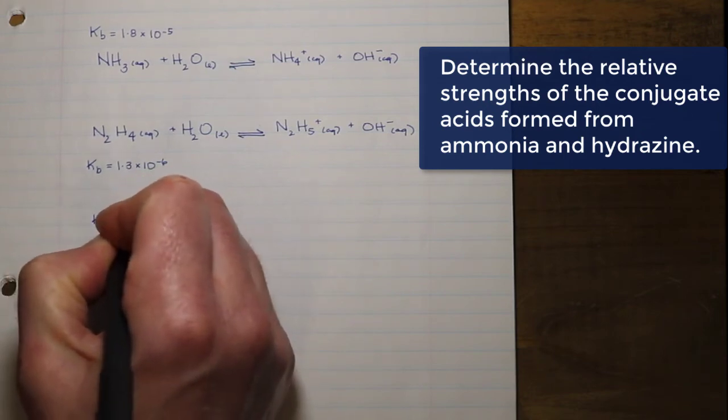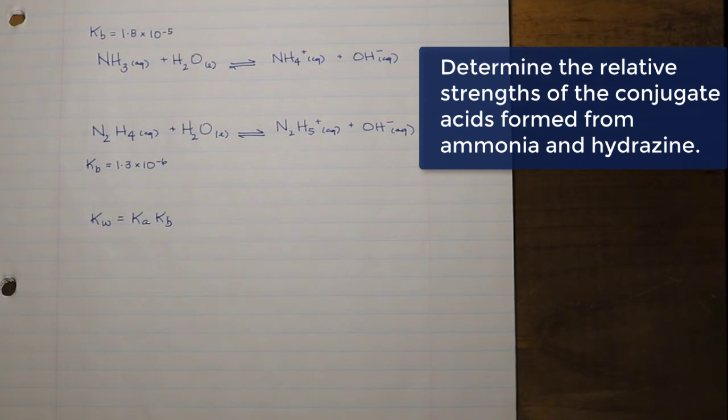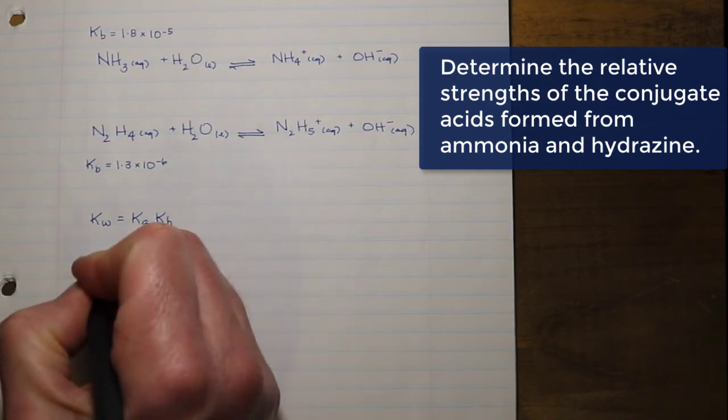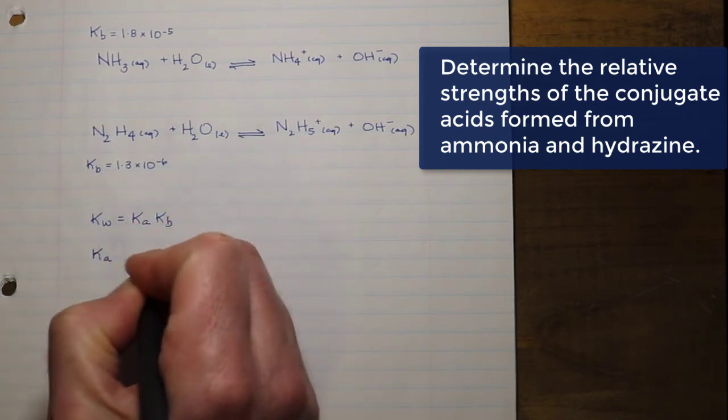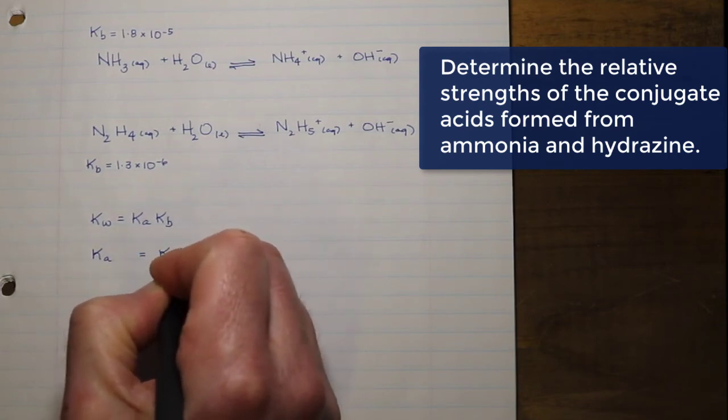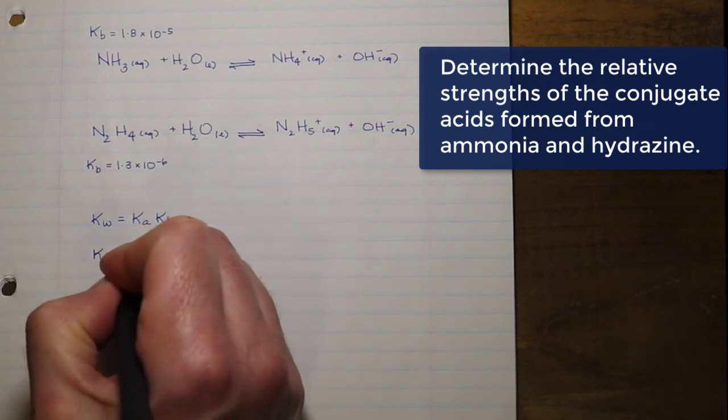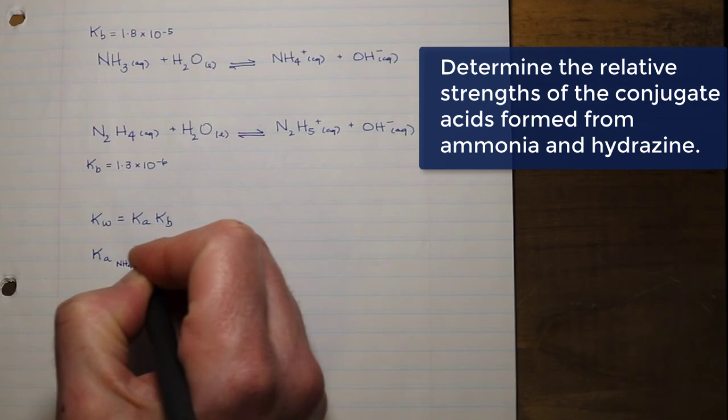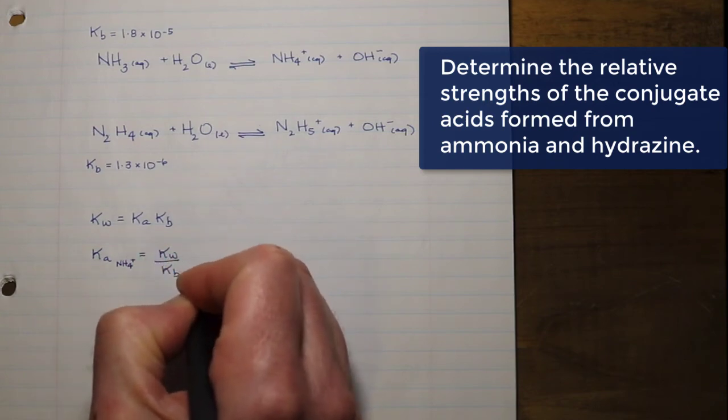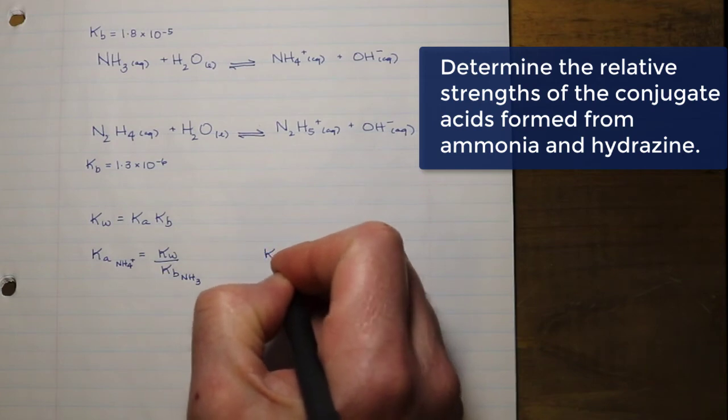In this case, we know that Kw under standard conditions at 25 degrees Celsius is going to be 1 times 10 to the negative 14, as it always is. We know both the KB's for both of the bases that we're analyzing, so we should be able to rearrange this equation to solve for the Ka for both of the conjugates. In the case of our first Ka, we are going to be establishing the Ka for the NH4 plus ion using the KB of its conjugate, which is ammonia.